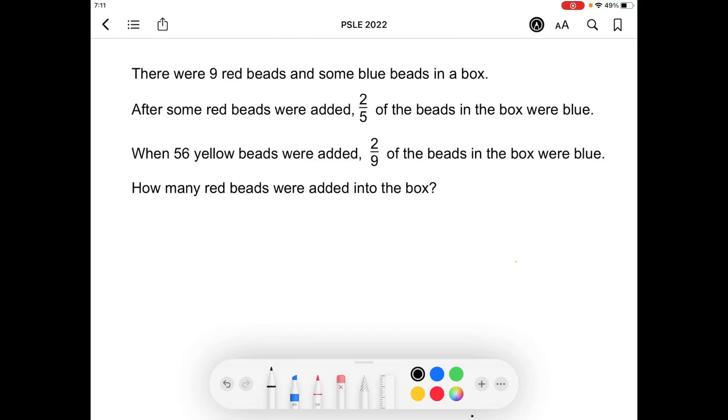For this question, I'm going to use a model to help me solve the question. There were 9 red bits and some blue bits in the box. So here are the red and blue bits in the box at first.